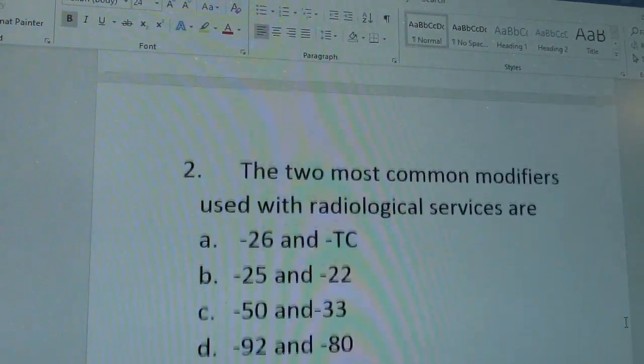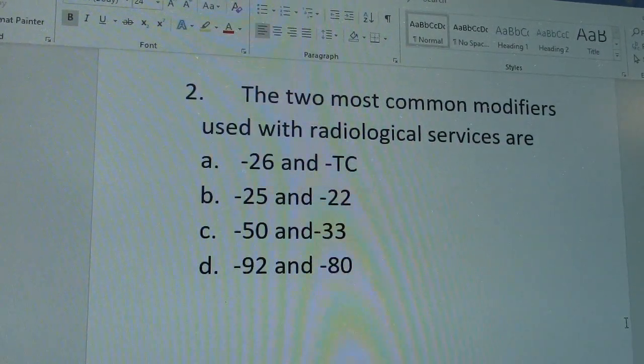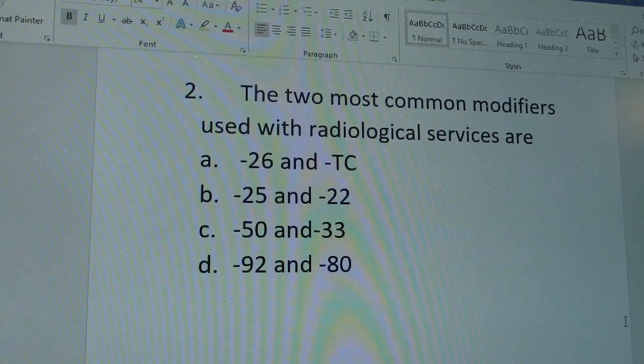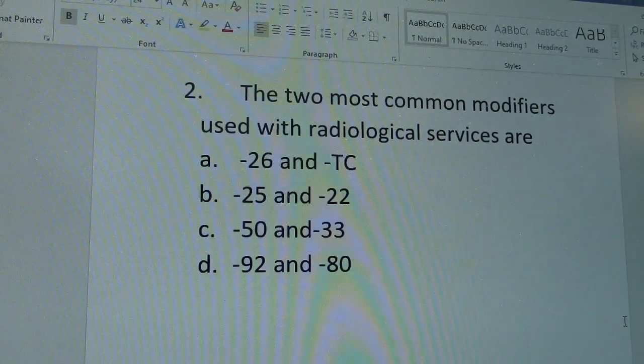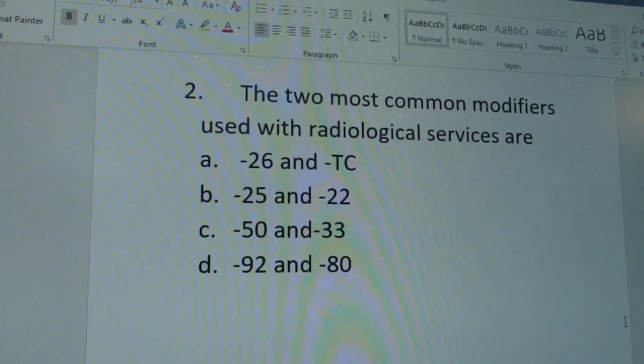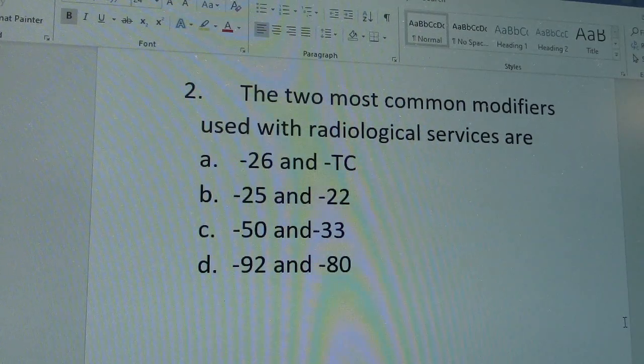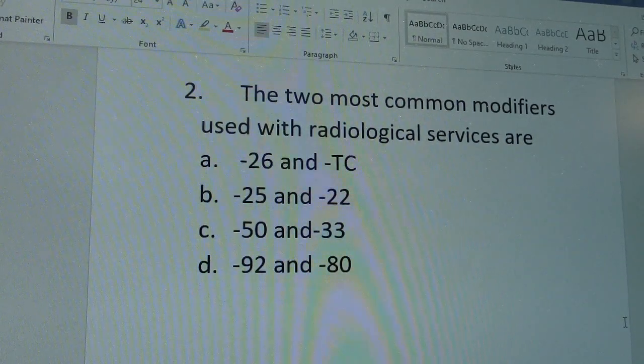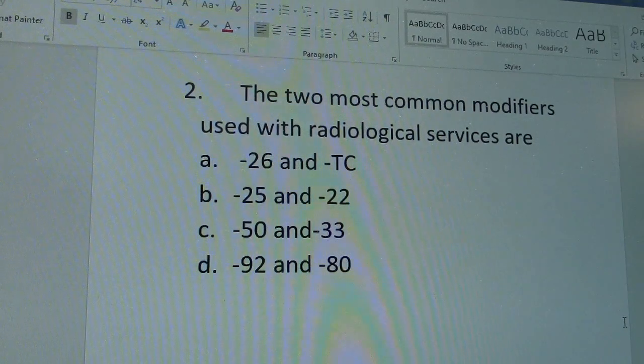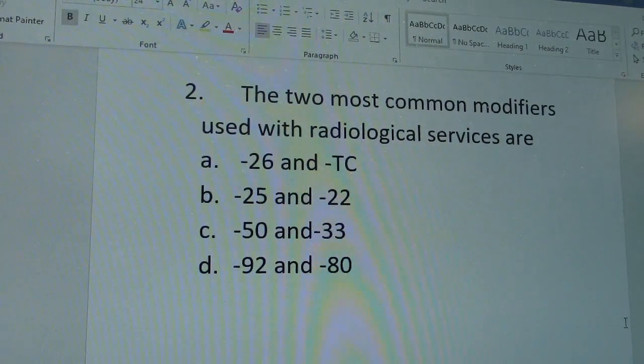And question number two. The two most common modifiers used with radiological services are, is it modifiers 26 and TC? Modifiers 25 and 22, modifiers 50 and 33, or modifiers 92 and 80?